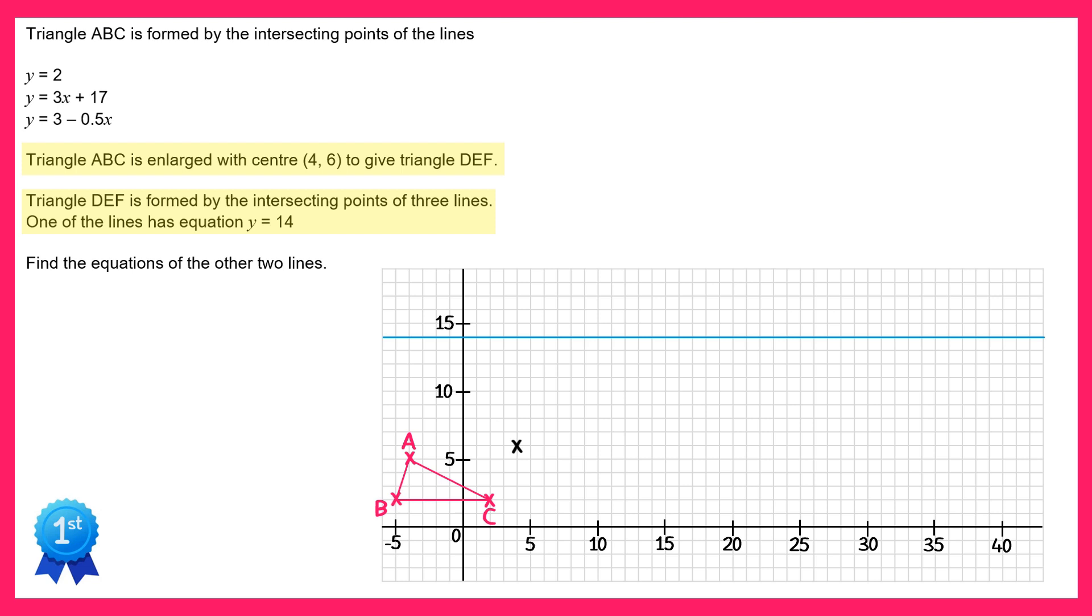What we're going to do next is draw on some ray lines going from the points b and c through the centre of enlargement. So if we do that with b first it goes like this. And if we do that with c afterwards it looks like this.